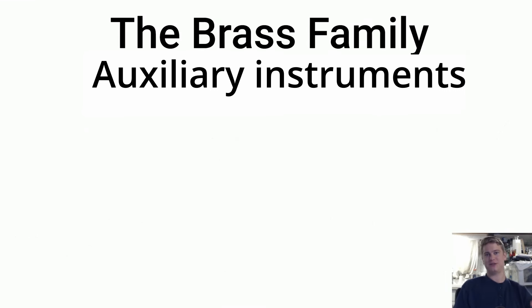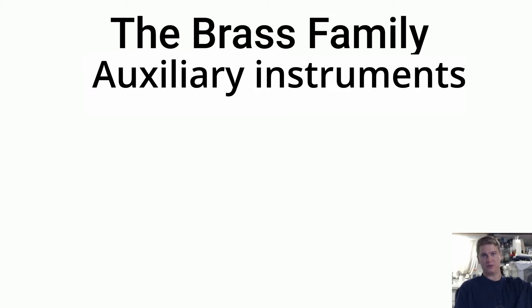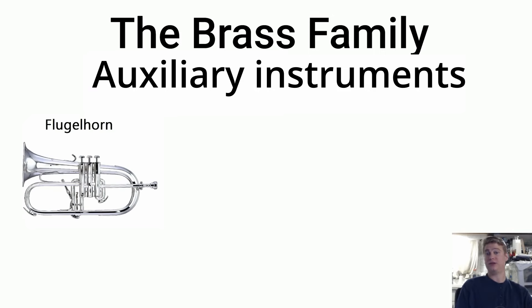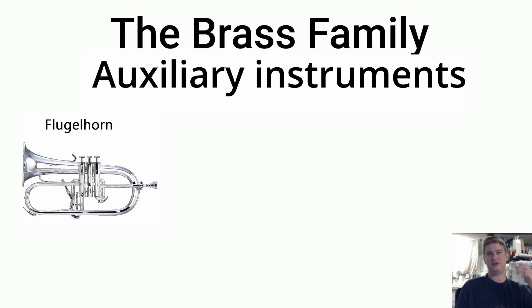Now looking back at brass instruments and tying in auxiliary instruments before we go into percussion — one instrument that could be considered an auxiliary brass instrument is the flugelhorn. This is similar to the trumpet and is also a transposing instrument in B-flat. The two instruments actually share the same tubing size, but the timbre of the two instruments is distinctly different.